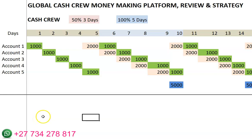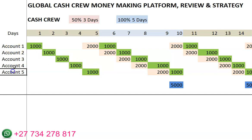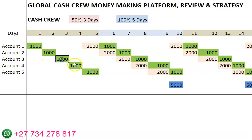With Global Cash Crew, you can use the strategy of putting in 1,000 rand per day, but you structure it across about five accounts — which you can have yourself and your family. So from the first day, if you're putting 1,000 rand into your account and your family's accounts, on the fifth day 2,000 rand will come out.